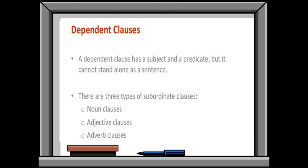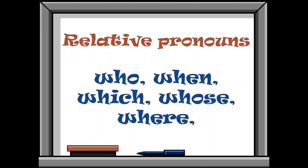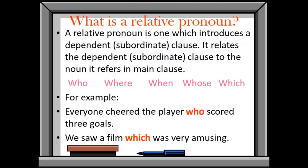There are three types of subordinate clauses: noun clause, adjective clause and adverb clauses. We will learn about these clauses in our further lectures. Now moving towards the relative pronouns. These are the relative pronouns: who, when, which, whose and where. What is a relative pronoun?